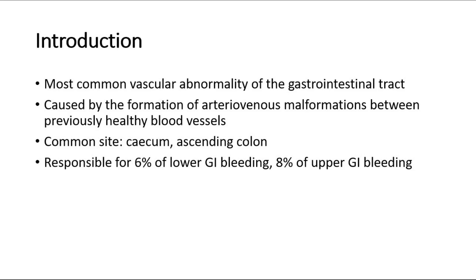Angiodysplasia is the most common vascular abnormality of the gastrointestinal tract. It is caused by the formation of arteriovenous malformations between previously healthy blood vessels, most commonly in the cecum and ascending colon. It is responsible for approximately 6% of lower GI bleeding cases and up to 8% of upper GI bleeds.